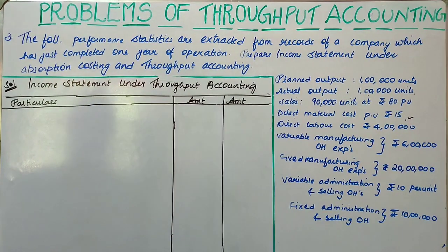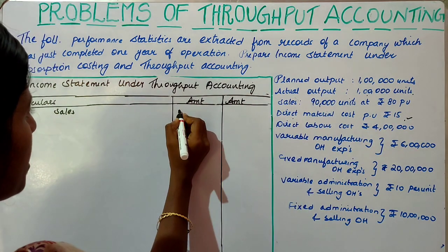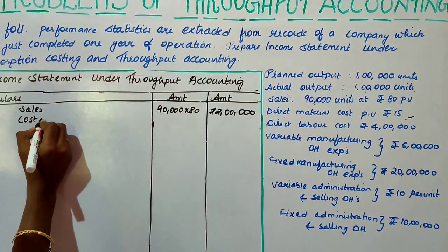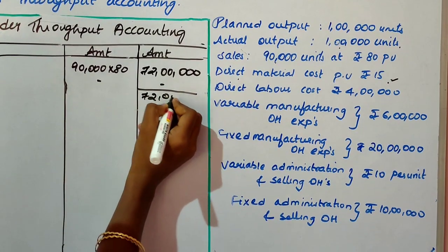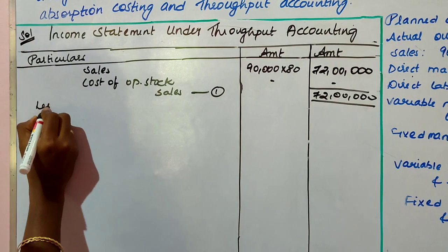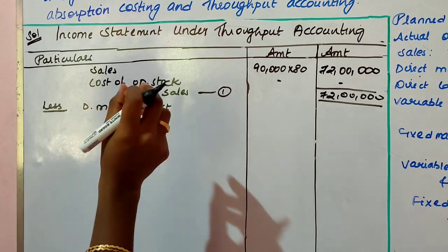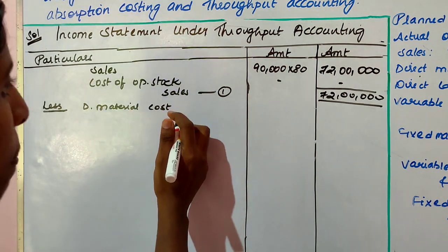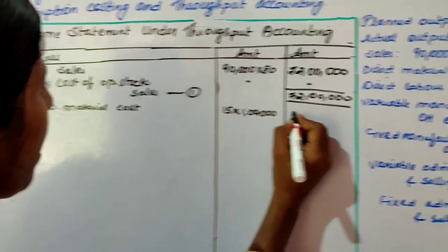Now we are going to start calculating under throughput accounting. We start with sales: 90,000 units at 80 per unit equals 72 lakhs. Opening stock cost is not given, so total sales is 72 lakhs. From this, deduct direct material cost — because in throughput accounting, only direct material is considered as variable cost. Per unit is 15 and output is 1 lakh, so direct materials cost is 15 lakhs.